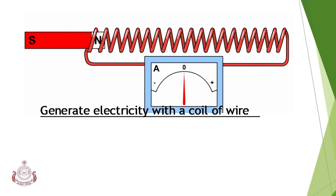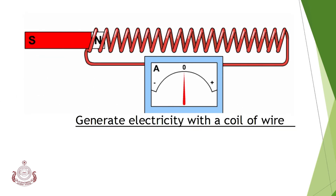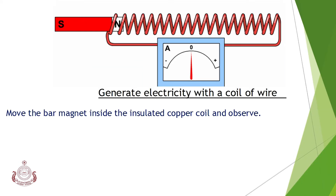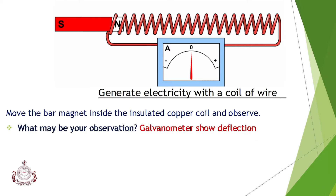This is another method of generating electricity. Electricity can be generated with a coil of wire. Move the bar magnet inside the insulated copper coil and observe. The observation is that the galvanometer shows deflection.